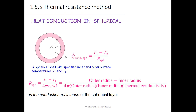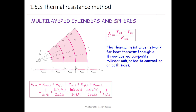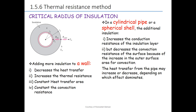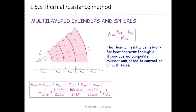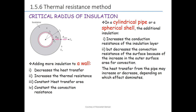For the spherical shape, R_spherical equals (R2 − R1) divided by 4πR1·R2·K. This is the conduction resistance of the spherical layer. That is how to calculate the thermal resistance for cylinder and sphere.